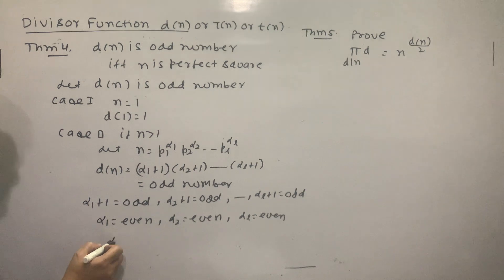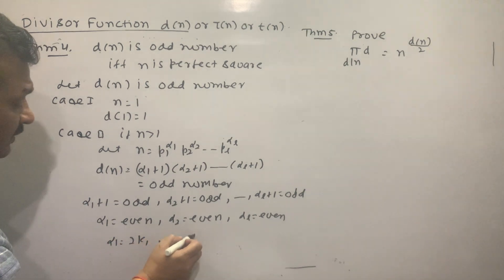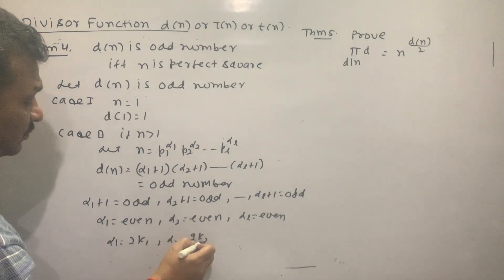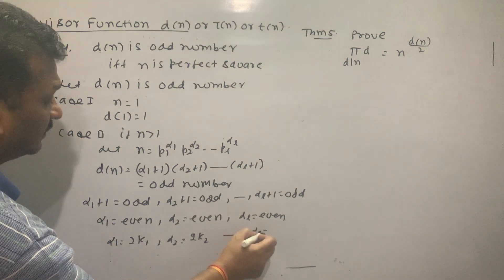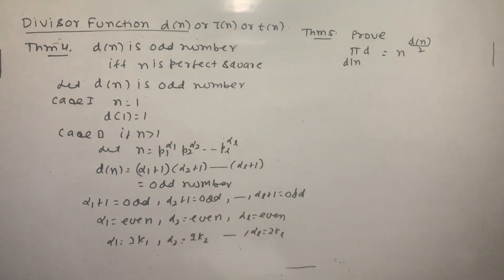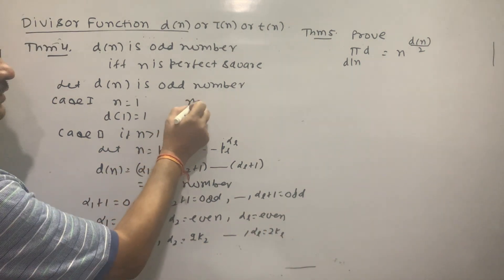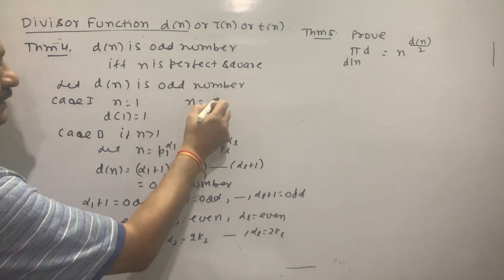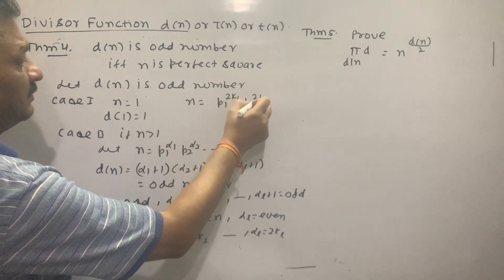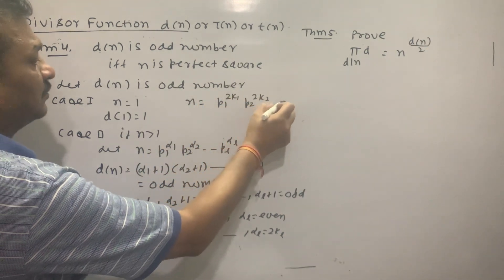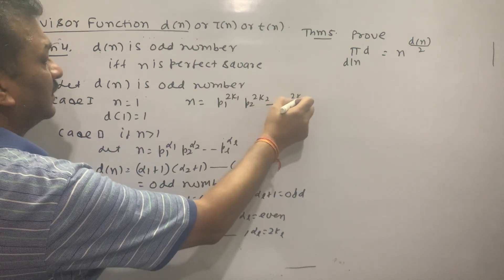Since d(n) is odd, each factor must be odd. So α₁ = 2k₁, α₂ = 2k₂, and αᵣ = 2kᵣ. Substituting, n equals p₁^(2k₁) · p₂^(2k₂) · ... · pᵣ^(2kᵣ).